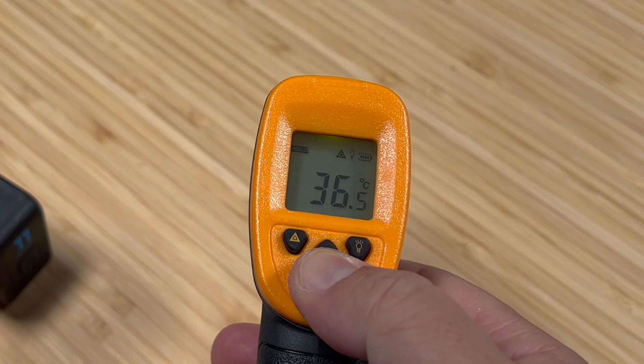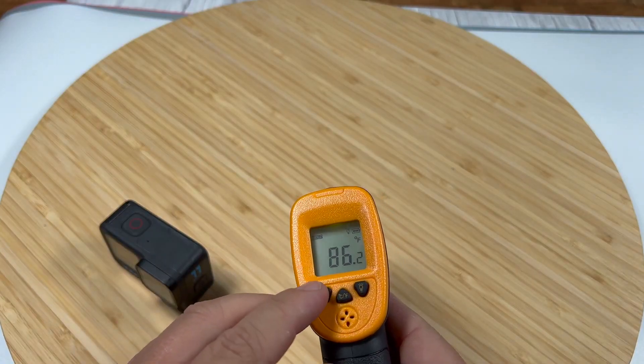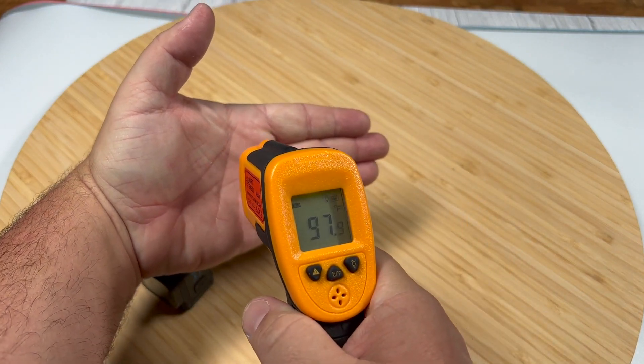You can also turn on a light, switch between Celsius and Fahrenheit, and even turn the laser beam off completely if you're holding it up to something and don't want the laser.